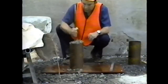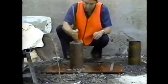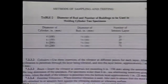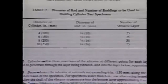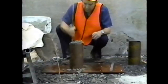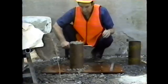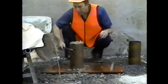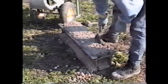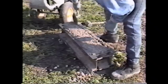When rodding is used, the number of strokes is usually 25 for the most common molds. Table 2 of AASHTO T23 gives the requirements for other molds. After each layer is consolidated, the outsides of the mold are tapped lightly 10 to 15 times to close any holes left by the rod or vibrator. When beams are made, the tapping of the mold should be followed by spading the concrete along the sides and ends with a trowel or other suitable tool.